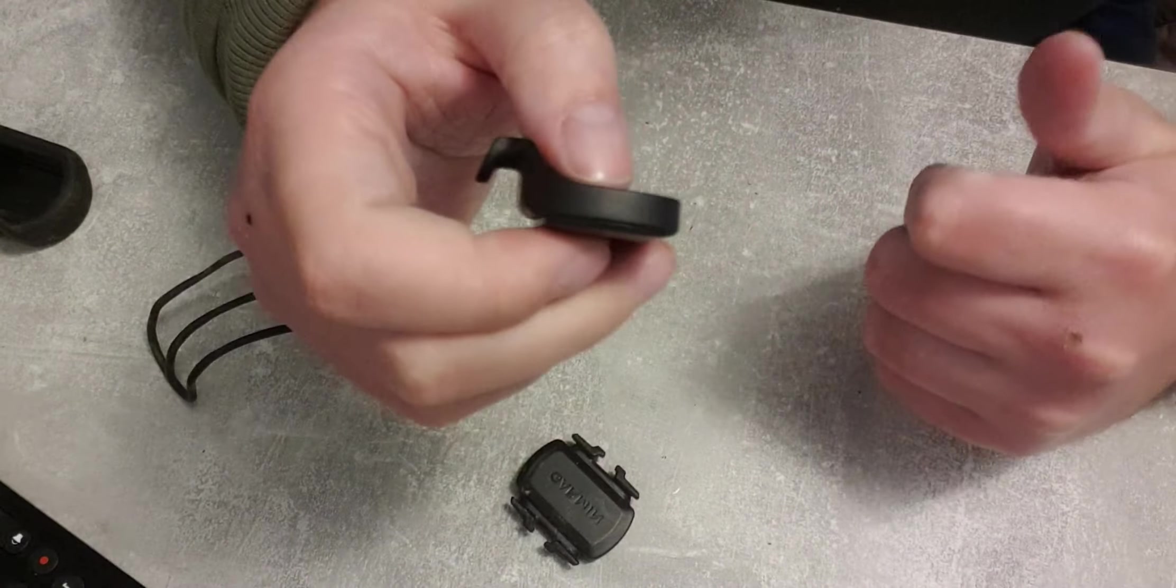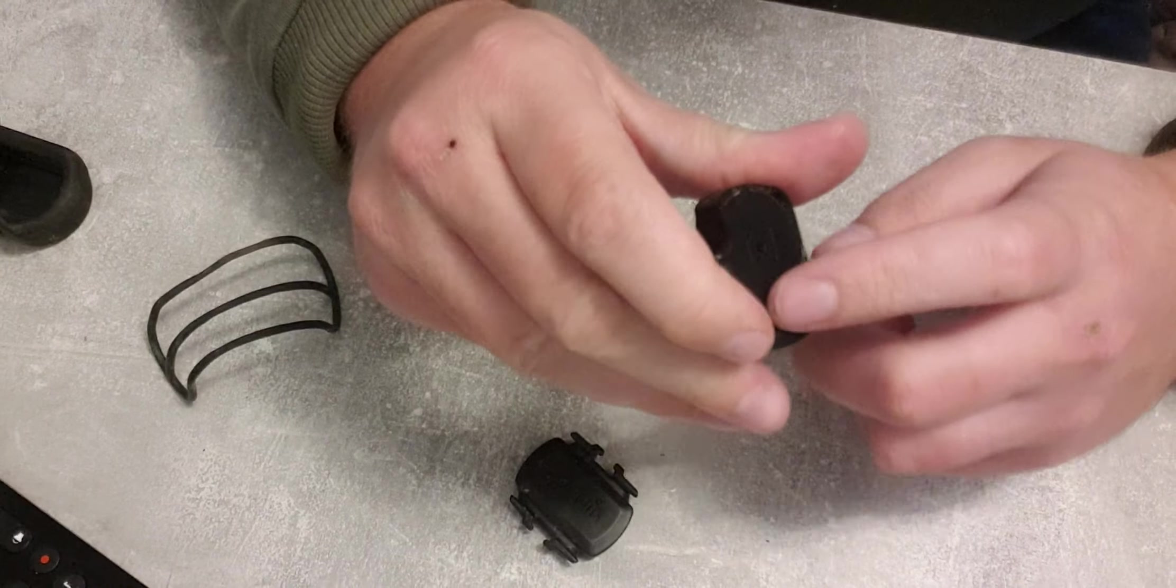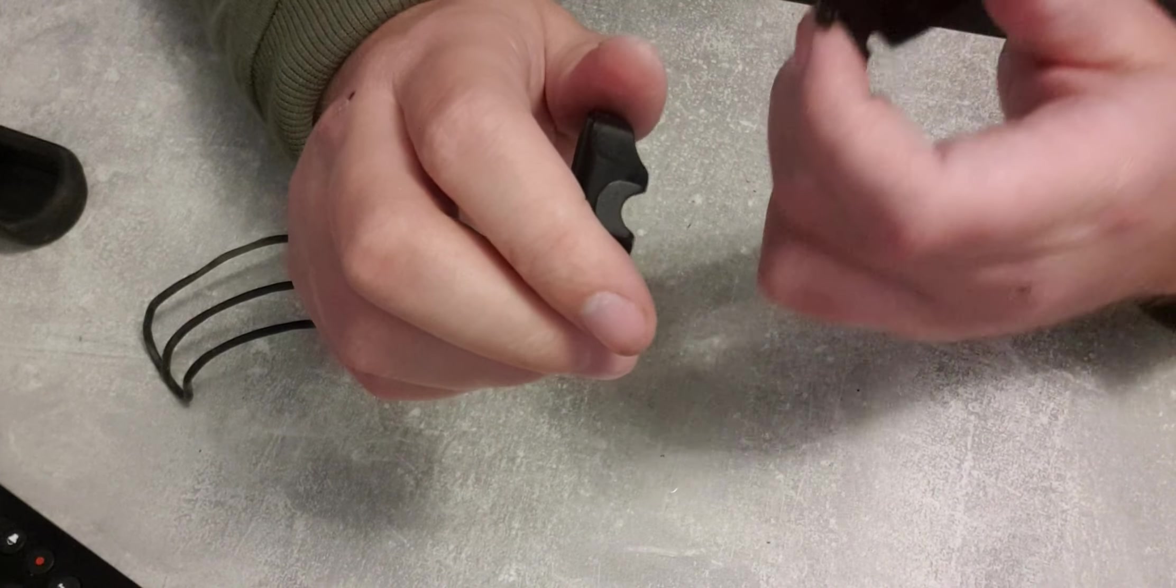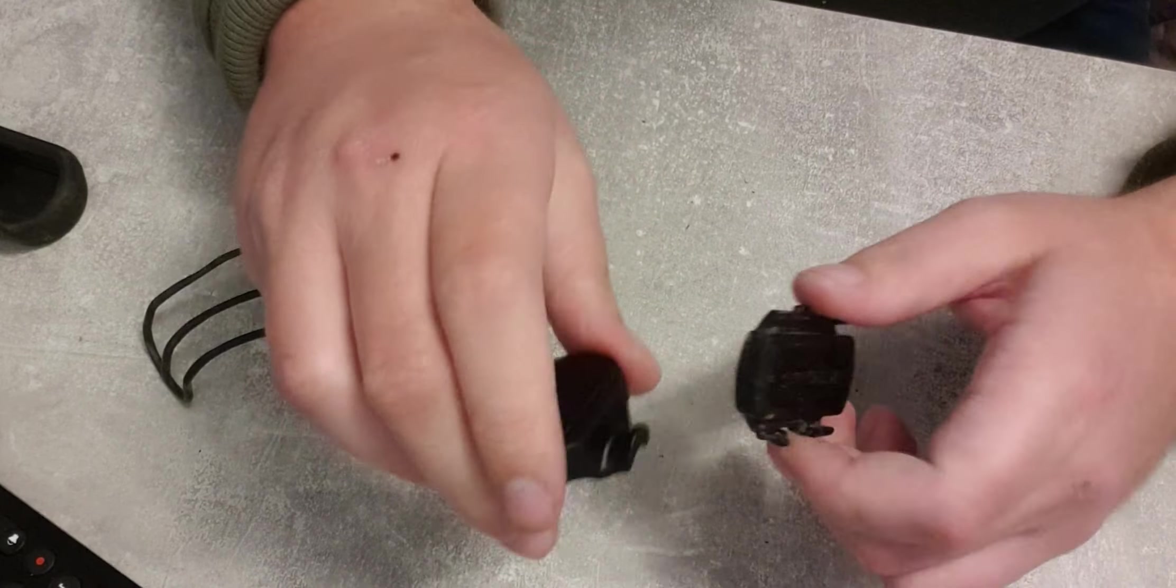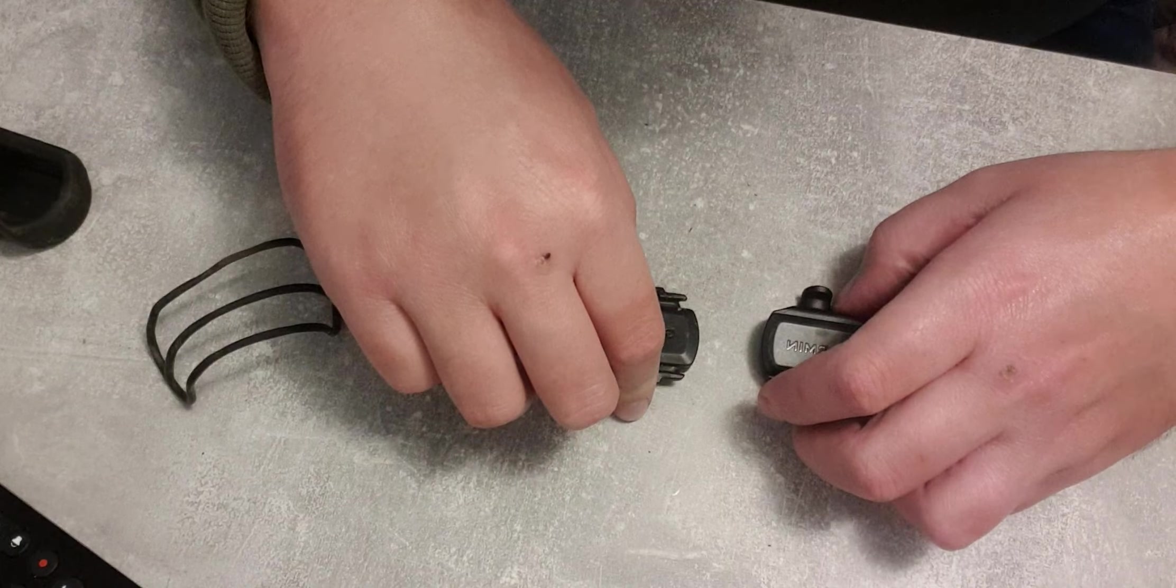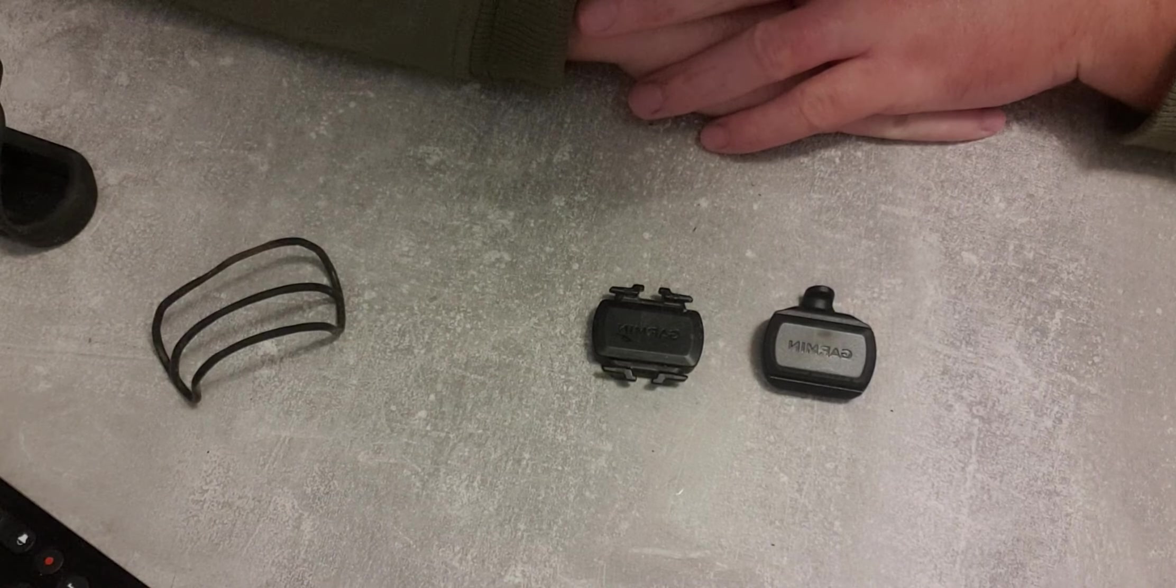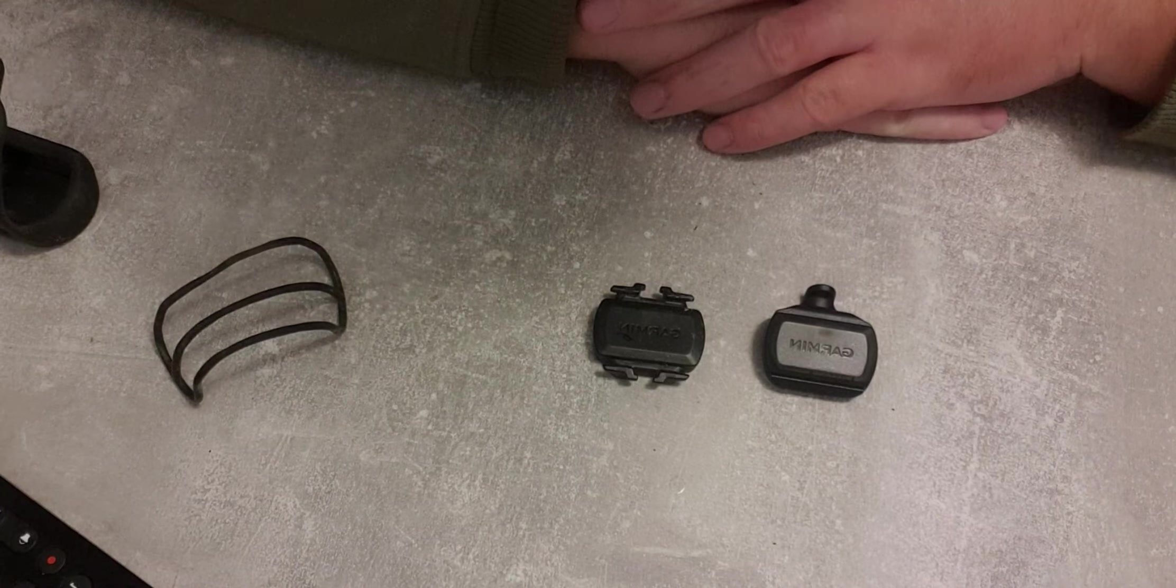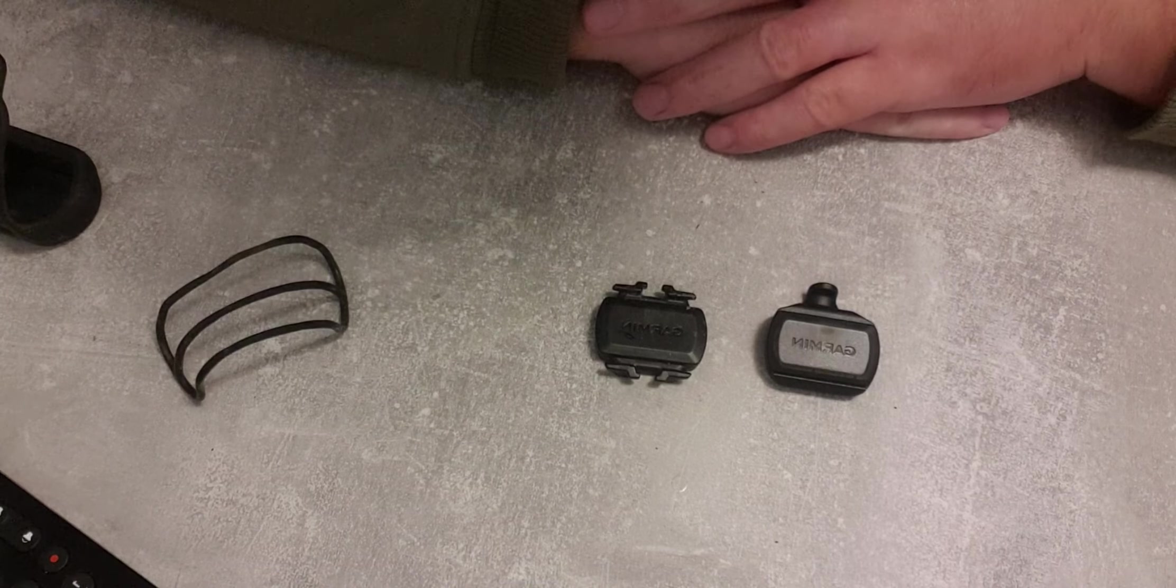And you can clean it too with like a rag and just clean them up. So there we go. And that's how you change the batteries on Garmin sensors.